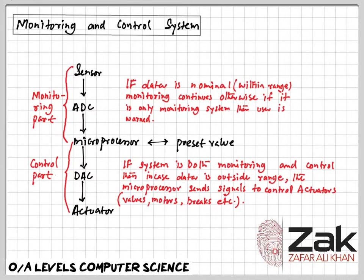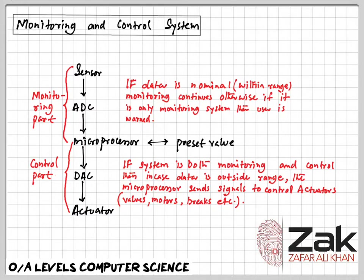We need to notice the importance of positive feedback, which is where the output from the system can affect the next input. Sensor readings may cause the microprocessor to alter a valve or a motor, for example, which will then change the next reading taken by the sensor. So the output from the microprocessor will impact on the next input received as it attempts to bring the system within the desirable parameters.